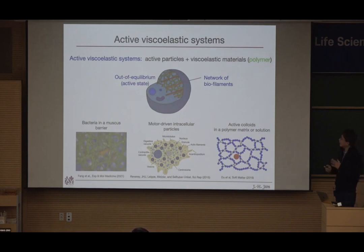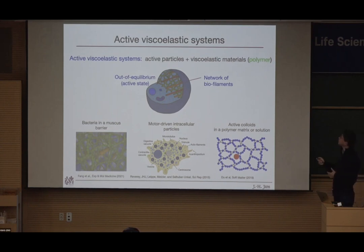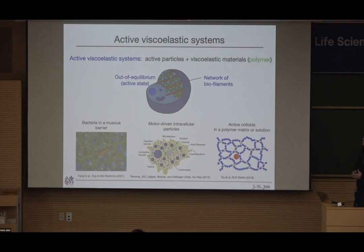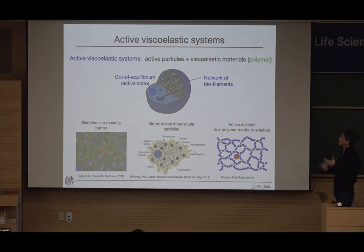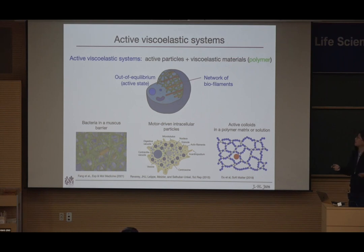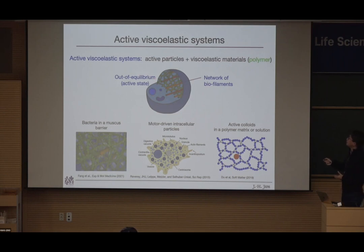Our group is now interested in active viscoelastic systems — active particles together with viscoelastic material, mainly polymer systems. The motivation is thinking about the cell: a cell can be modeled simply as a system where one main component is a network of filaments like actin and microtubules, making it highly viscoelastic. There are also many reasons for it to be out of equilibrium, i.e., in an active state. So we can understand the cell cytoplasm as an active viscoelastic system.